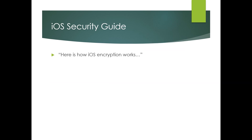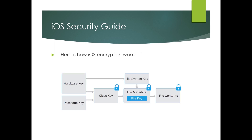If you go to Quora or someplace like that and see questions like 'how does iOS encryption work?', what usually happens is the person who answers pulls a diagram out of the iOS security guide and throws it up there — that's how they explain file encryption. Once I go through this explanation, you'll be able to understand that diagram. But I think Apple puts it up there so they can say they're explaining it, when they're not really. So instead, I'm going to use Russian dolls to explain it, because that makes a lot more sense.